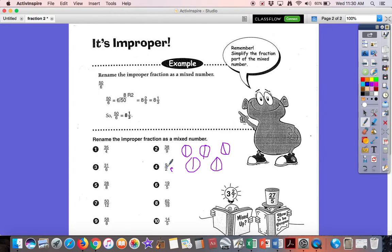And the top number means how many do I get. So, I get this one, one, two, three, four, five, six, seven, eight, nine. All right. Now, how many whole ones do I have? I have one whole one here, one whole one there, one whole one there, one whole one there. I have four wholes.